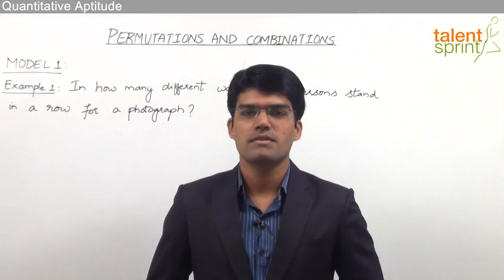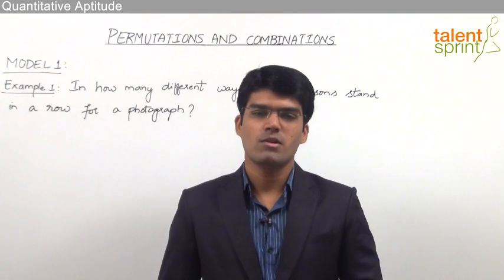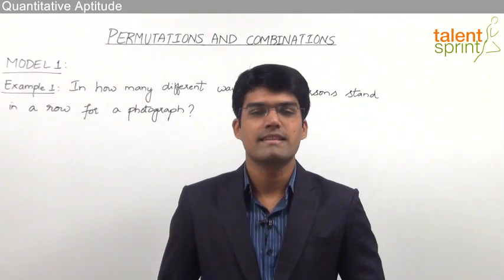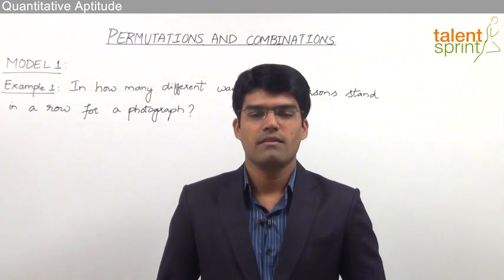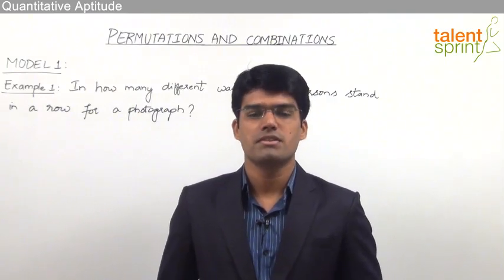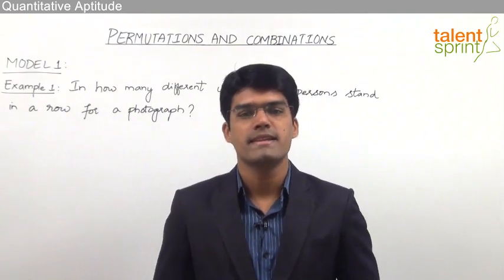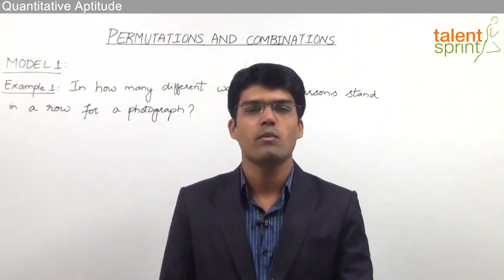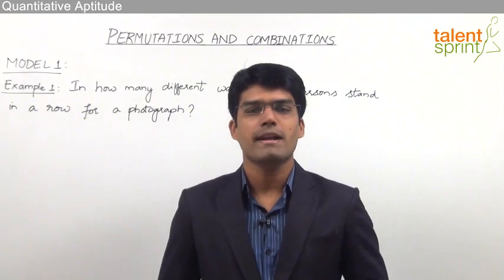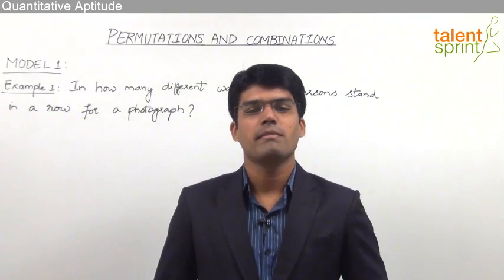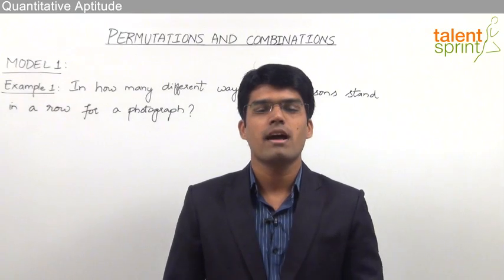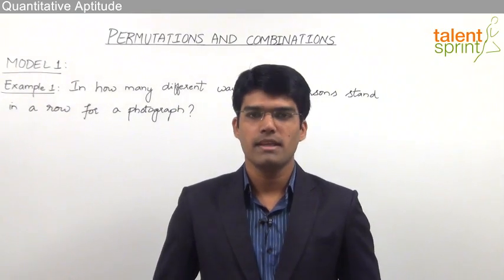Let us take the first model from this topic where we shall solve some basic questions from permutations, that is nothing but arrangement. We know that the number of arrangements or number of permutations of n objects taken r at a time is given by nPr, which is equal to n factorial by n minus r factorial. So let us understand where and how to apply the formula nPr.